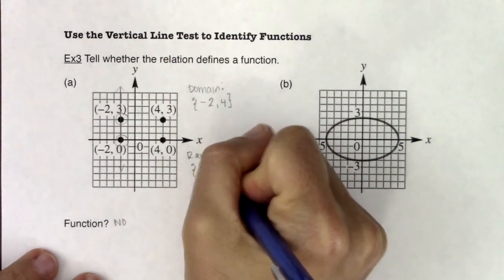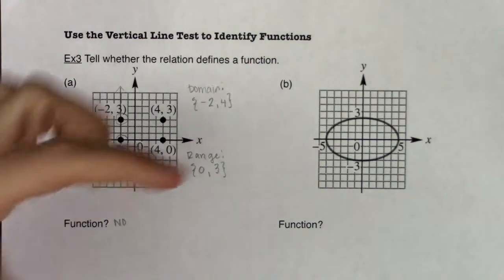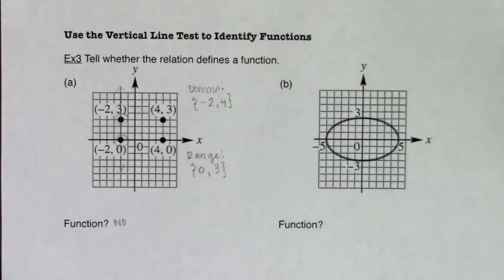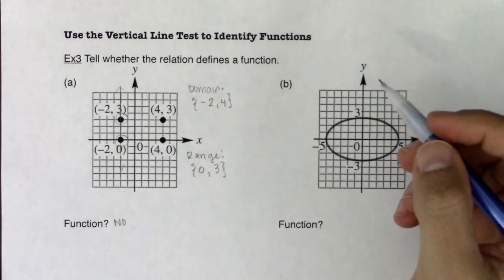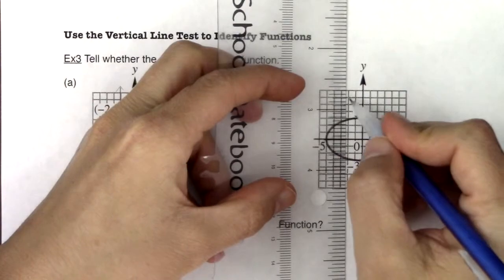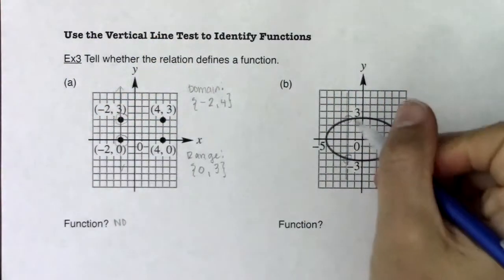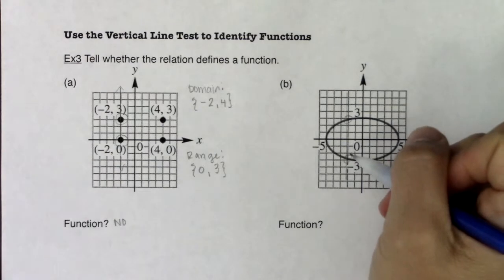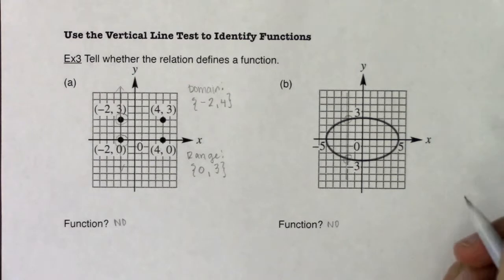Let's move on to part B. This is an ellipse — maybe you've seen an ellipse at some point in your math careers. I think of it as a circle that somebody sat on and smushed a bit. Is this relation a function? You can pass almost any vertical line through here and you see it intersects at two points. When a vertical line hits your relation at two points, it fails the vertical line test — so no, this is not a function.